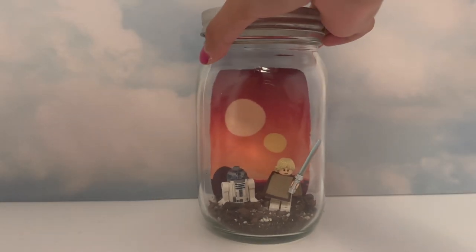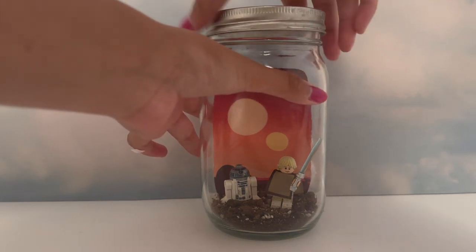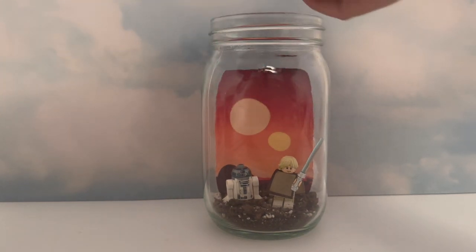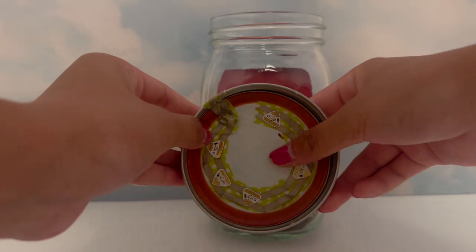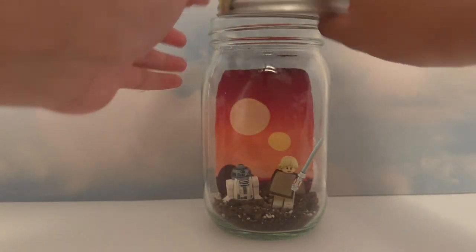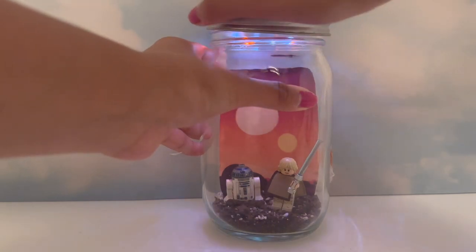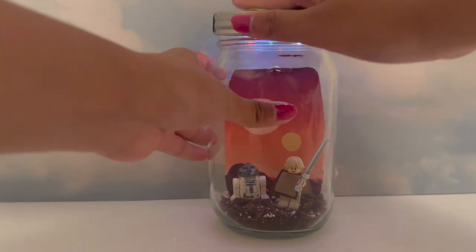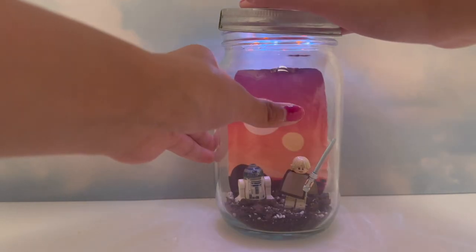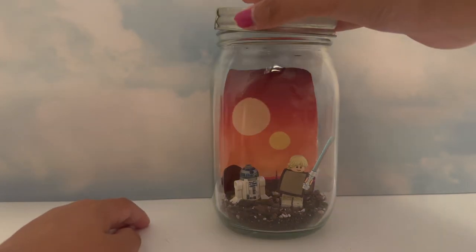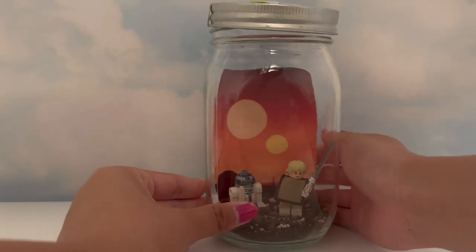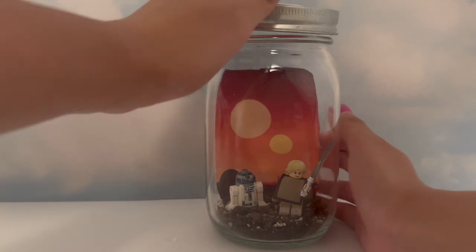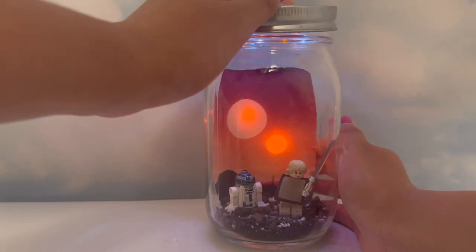This next one's for you Star Wars lovers out there. My little brother loves Star Wars and so I made this one for him. As you can see, Luke and R2-D2 are just Lego figures, which shows how you can really use any small trinkets or toys that you have lying around in your house. I added an additional circuit on the back of the jar behind the two suns of Tatooine so that they light up orange, and there's a separate button for this behind the jar.